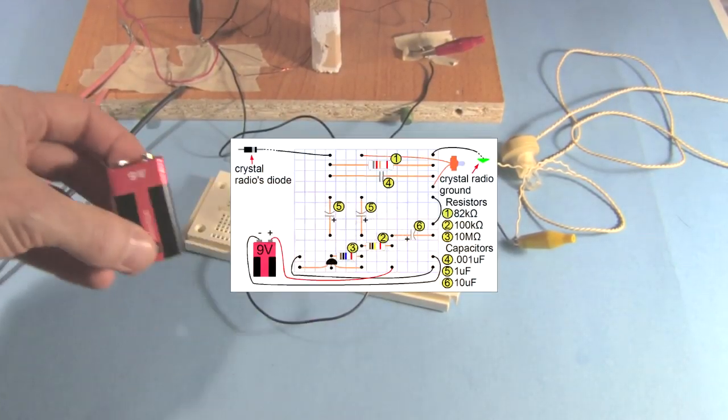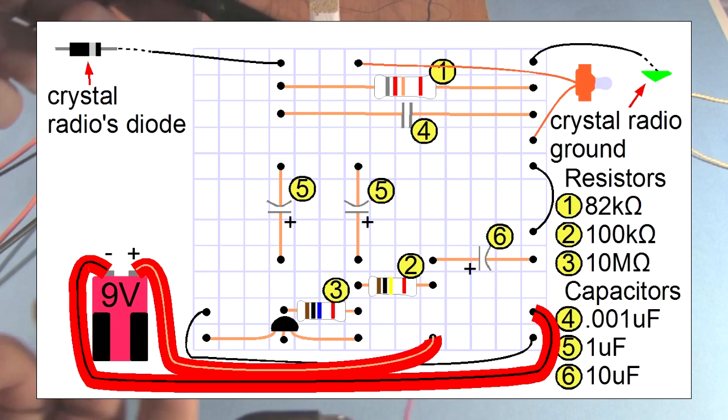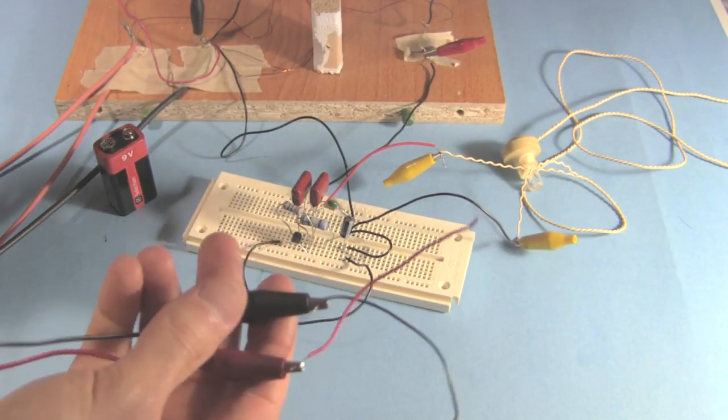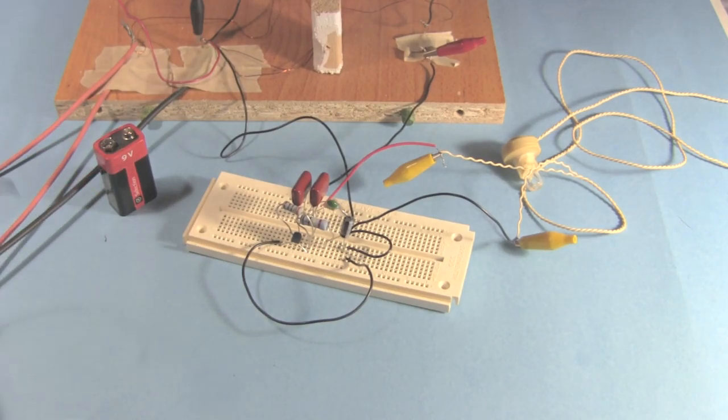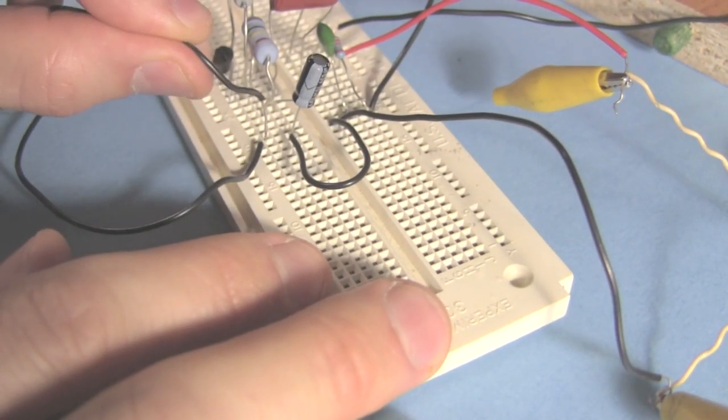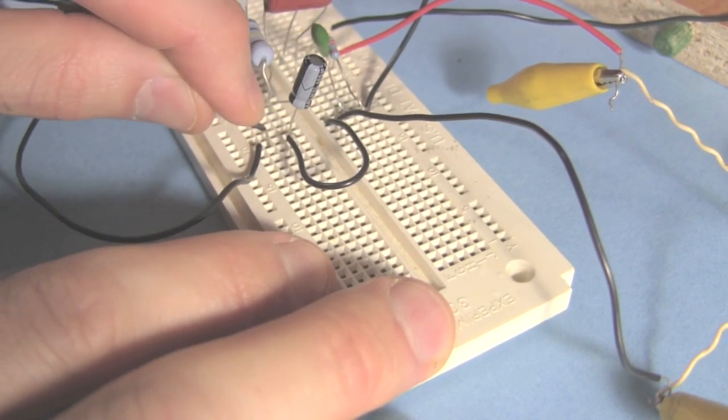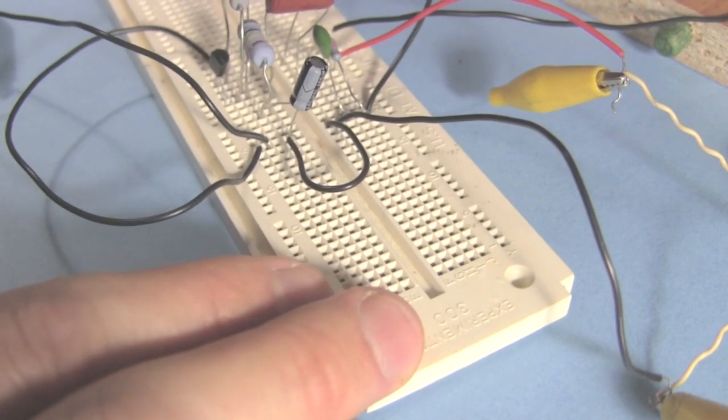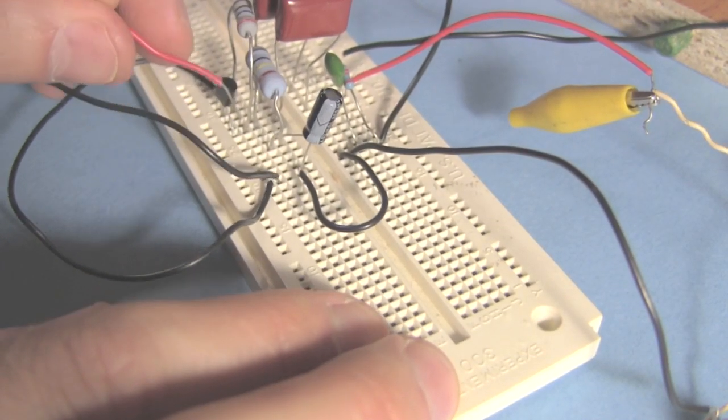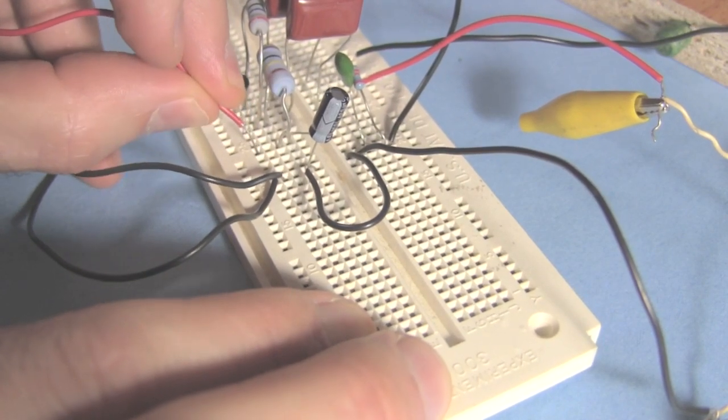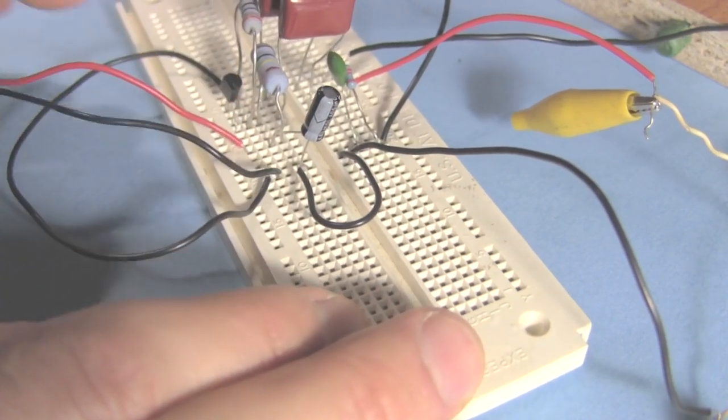Next up is the 9-volt battery. What I've done is I've got some alligator clips here and I've just connected on some stiff solid wire there. I'm going to take the black one or negative and plug it into the ground row. And then the red one or positive and that goes in the same row where the 10 microfarad capacitors positive is.